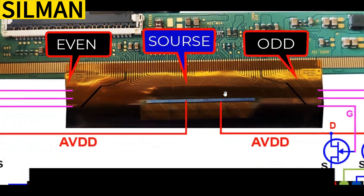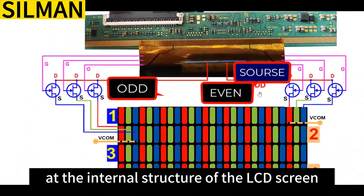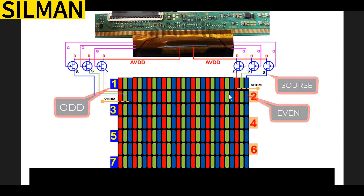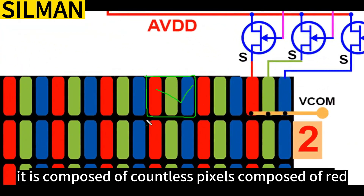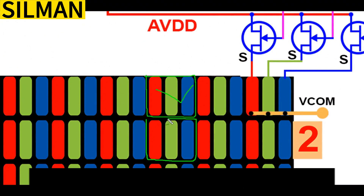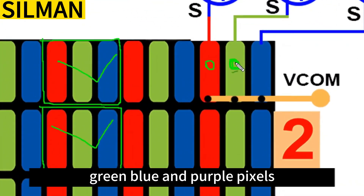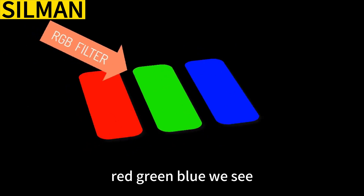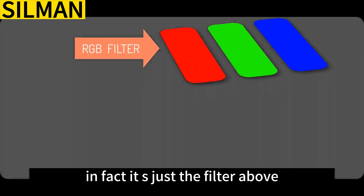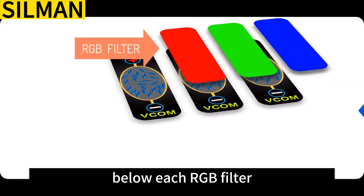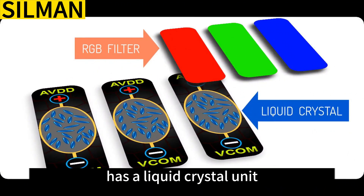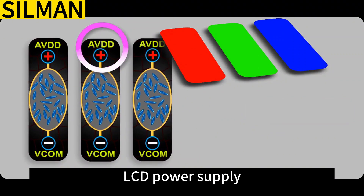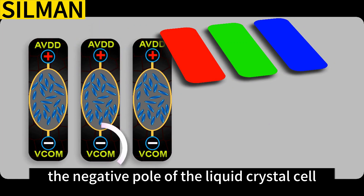Let's take a closer look at the internal structure of the LCD screen to see where these lines go. Inside the LCD, it is composed of countless pixels made up of red, green, and blue sub-pixels. A pixel is composed of three sub-pixels — red, green, and blue — also called RGB filters. Below each RGB filter there is a liquid crystal unit, and there are millions of TFT transistors sourcing these units. The 15-volt AVDD on the logic board connects to the positive pole of each LCD cell's power supply.